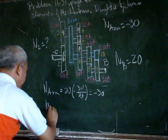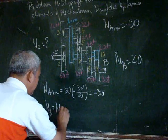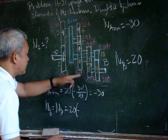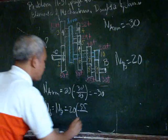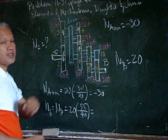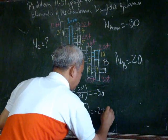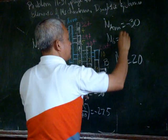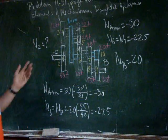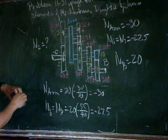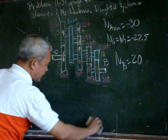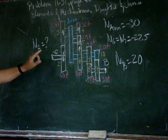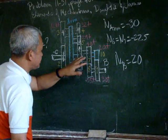The rotation of gears 6 and 7 is equal to 20 multiplied by negative 55 over 40, and that gives us negative 27.5. So that is the rotation of 6 and 7, which are part of the epicycle train. We can now proceed with the actual solution for the rotation of n sub 2, which is part of the epicycle train from this arm and gears 6 and 7.